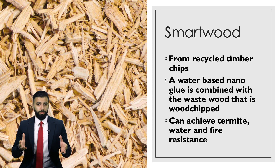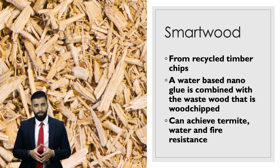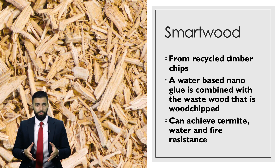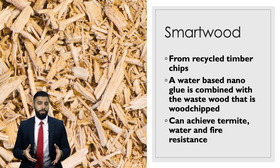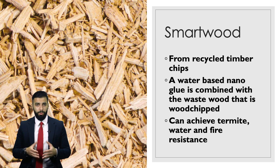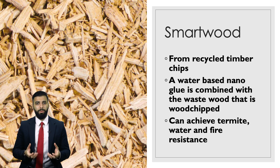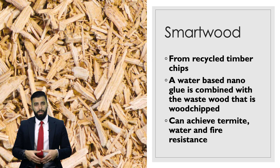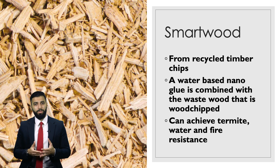Our third alternative sustainable material is smart wood. Smart wood is made from recycled timber chips, and a water-based nanoglue is used to combine the waste wood together. The material replicates the strength of a hundred-year-old tree. In addition, smart wood can be manufactured to be termite, water, and fire resistant — which is something that's highly desired in the construction industry.